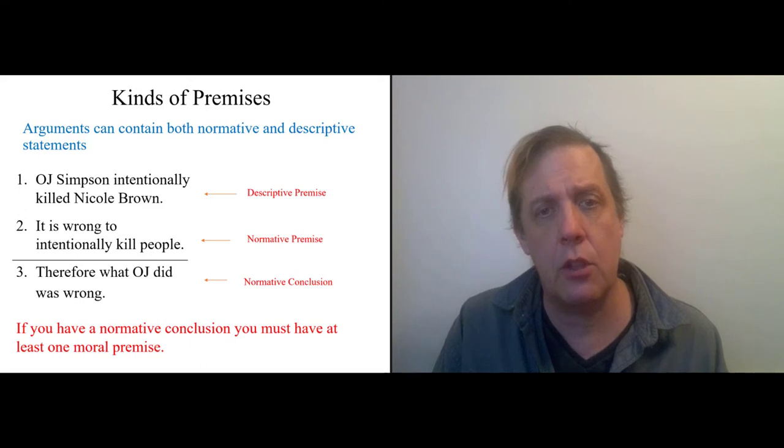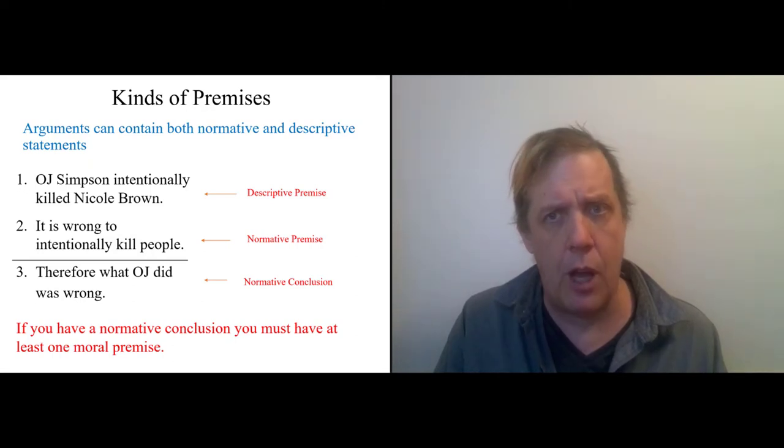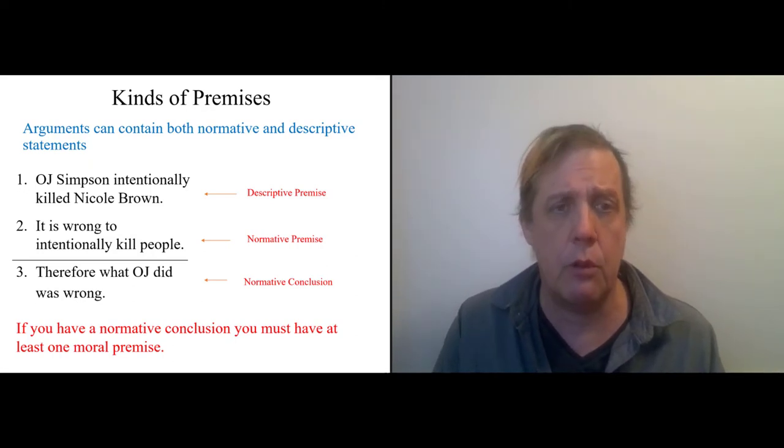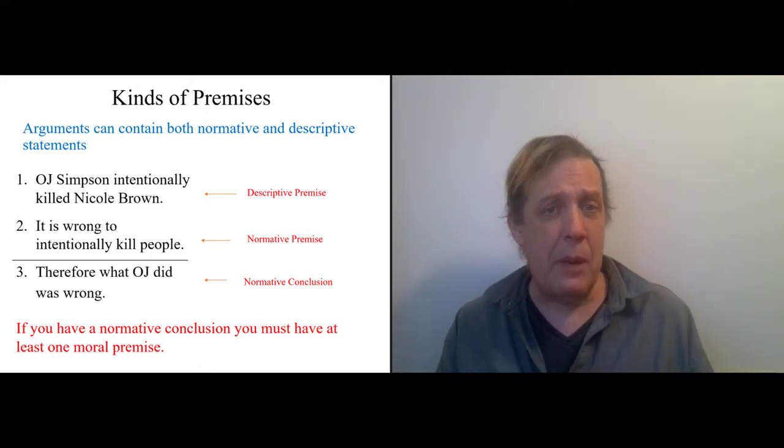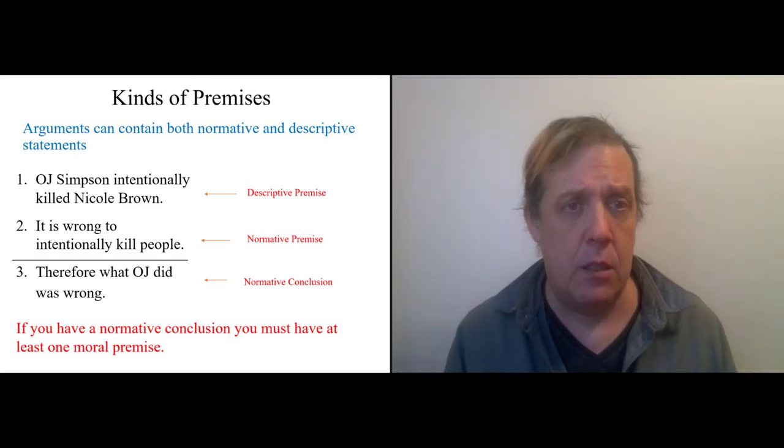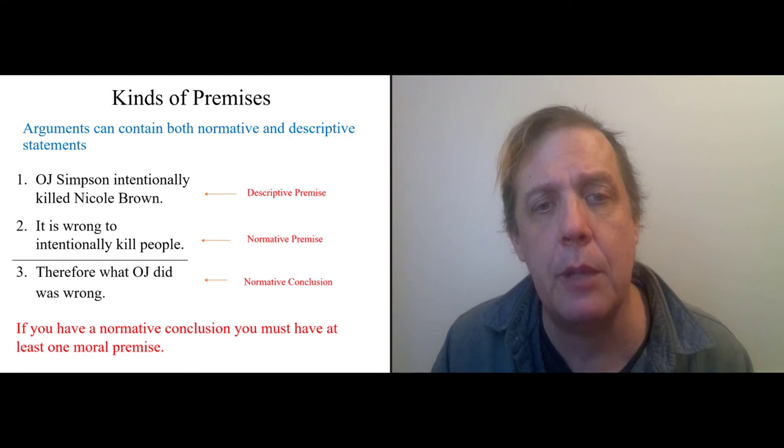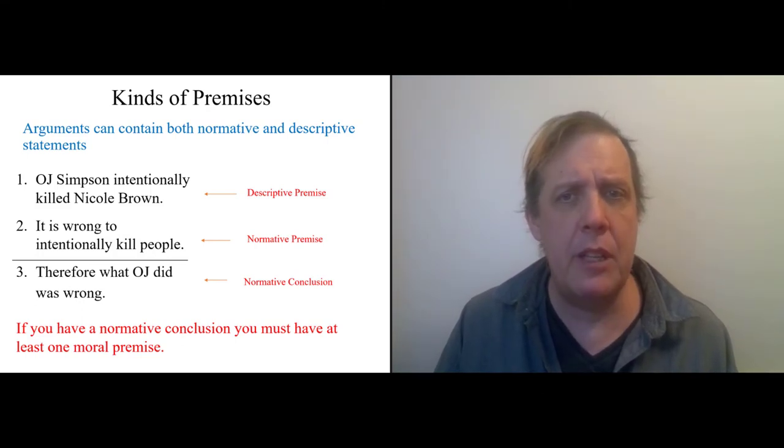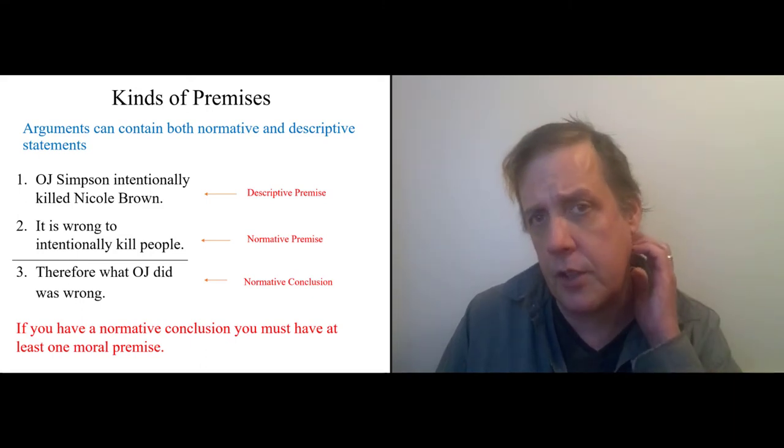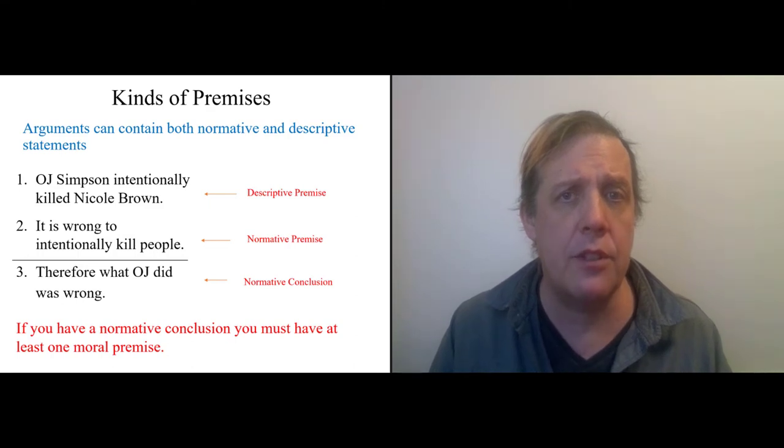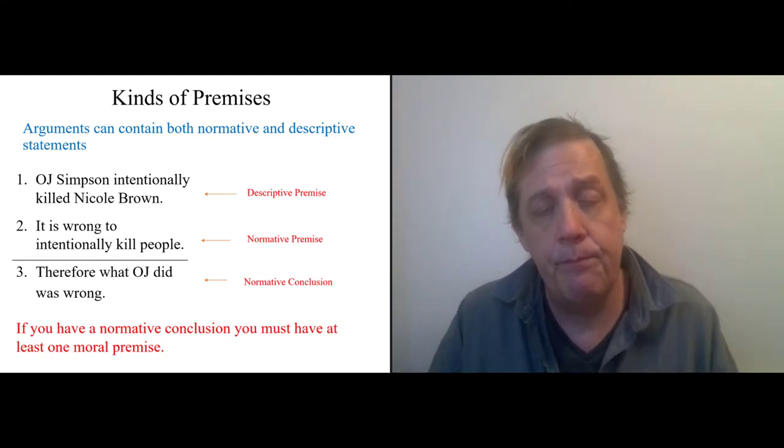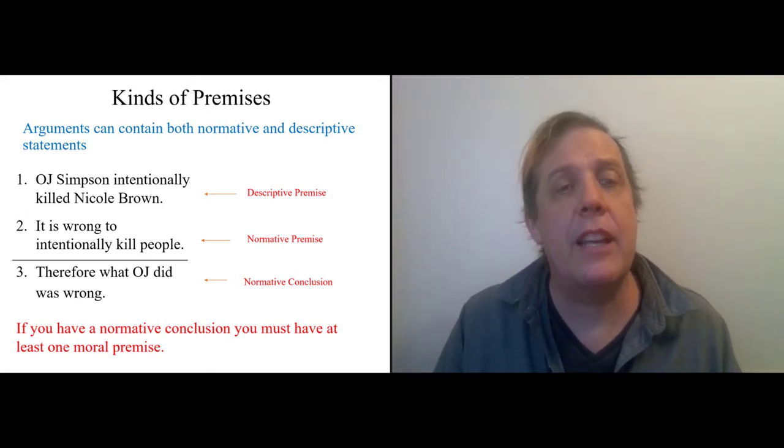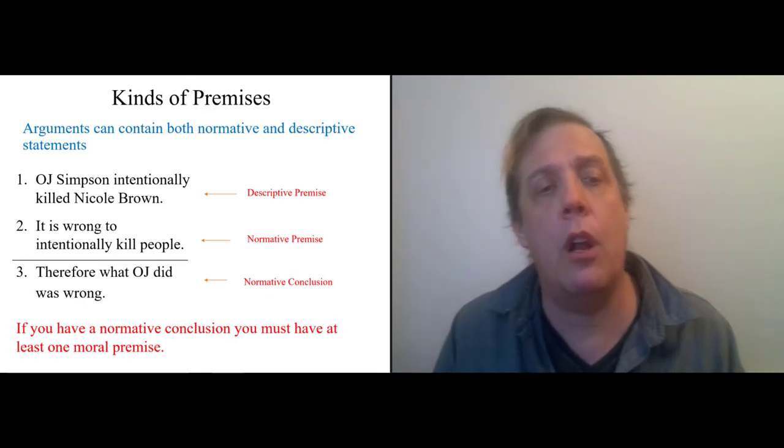So here's another slide I've been using a while. OJ Simpson intentionally killed Nicole Brown. That's what we call a descriptive premise. It could be true. It could be false. And for a while, people had really strong opinions about whether it was true or false. But it's just a description of how the world is. It is wrong to intentionally kill people. This is a normative premise because it's about how the world should be. You shouldn't kill people. Interestingly, everyone immediately says, well, this is a true normative statement, but almost everyone, except for pure pacifists, will actually say that there are some circumstances in which killing is acceptable. So in any case, from that, you can get a normative conclusion, what OJ did was wrong.